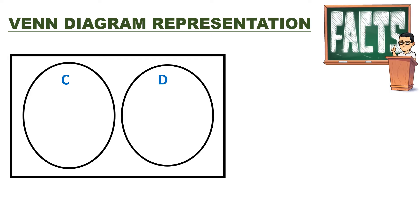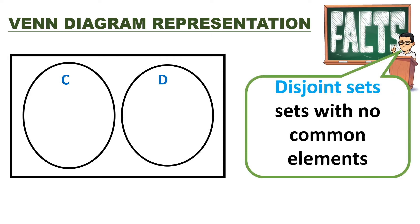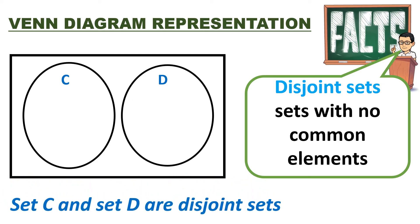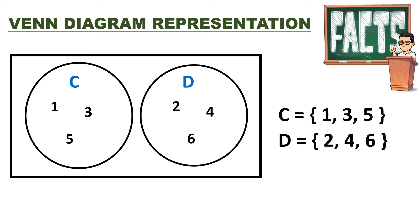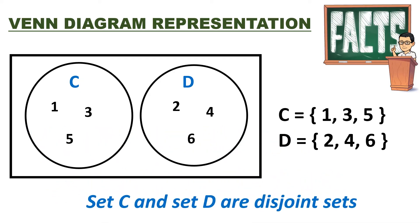The next Venn Diagram representation is what we call disjoint sets — sets with no common elements. The given figure represents disjoint sets. Set C and set D are disjoint sets. As we can see, they don't have common elements, so we can say that set C and set D are disjoint sets.